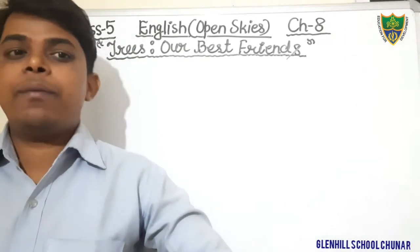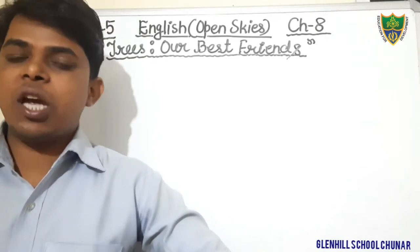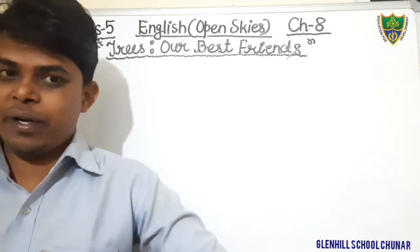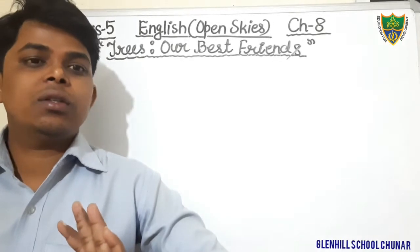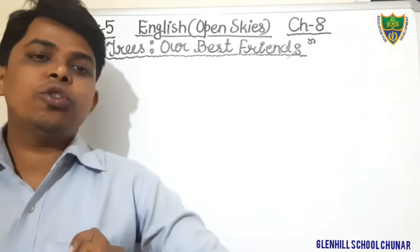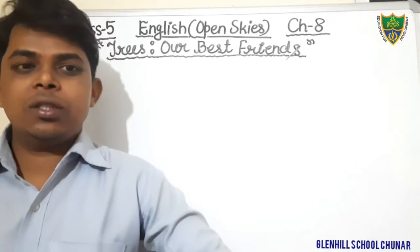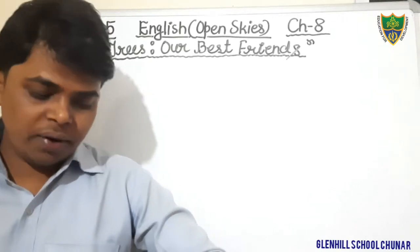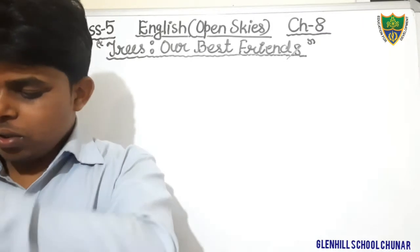Dear students, in this chapter we have read the explanation of the topics in detail. It covers the importance of trees in our life and why trees are called our best friend. I have taught everything related to the explanation and story of this chapter in the previous class. Those who did not attend can watch the previous video at my YouTube channel. Today we will discuss the exercises given in the chapter. Open your English book, Open Sky, at page number 62.